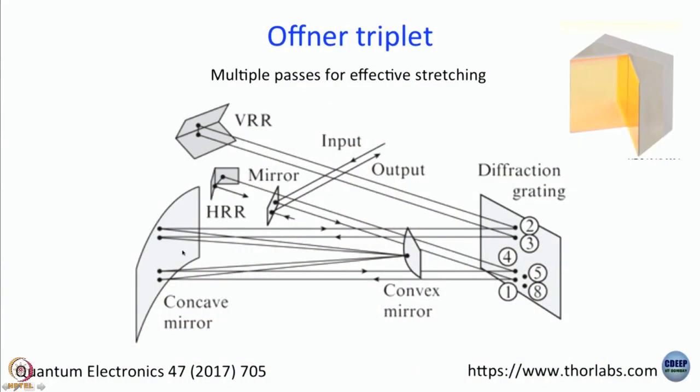Remember we have said that if you want a good amount of chirp to be introduced, then the path length would better be large. So here path length is large without the stretcher having to be too large. If you had only this plane mirror, concave mirror and grating, path length would have been maybe one-fifth or one-tenth of what it is in this arrangement. This is basically a geometry in which a lot of passes are made so that the effective path length is significantly large and you can get a good amount of chirp introduced.